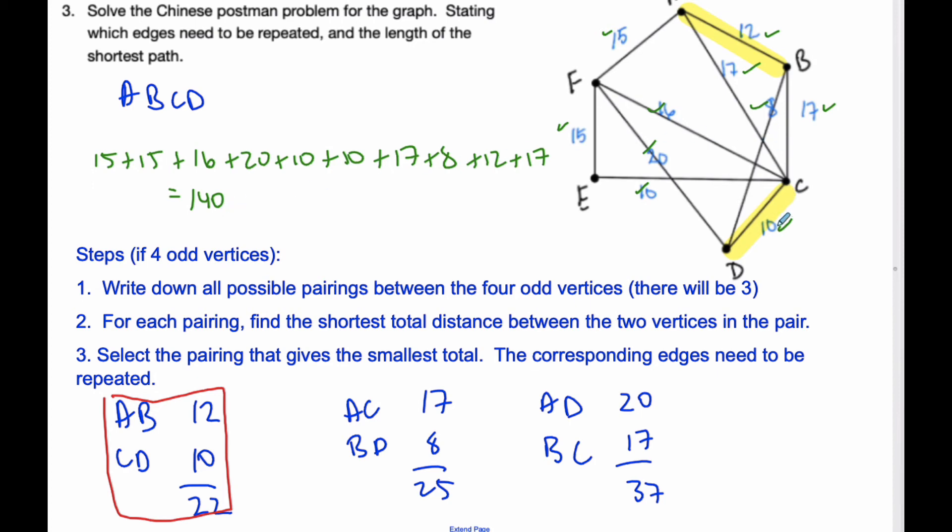And then the total length, I'm going to have to do these ones twice. So I'm going to add plus the two doubles, which is 22. And so the total is going to end up being 140 plus 22 is 162, is the shortest distance.